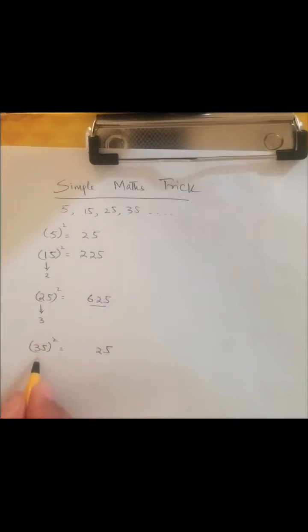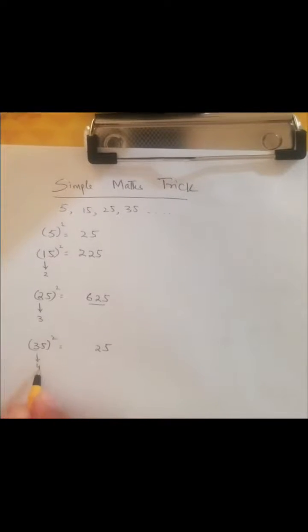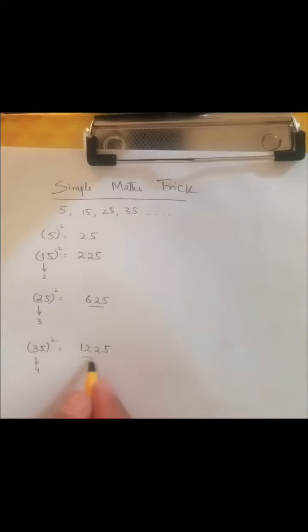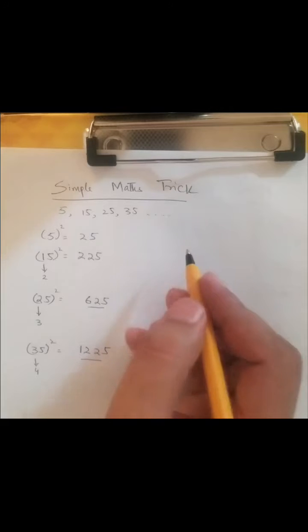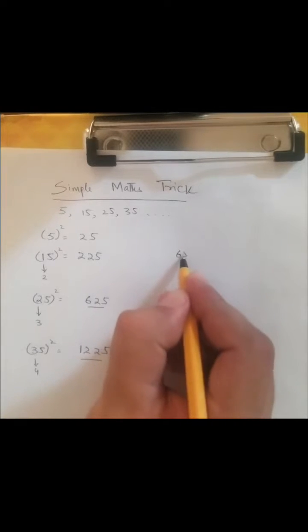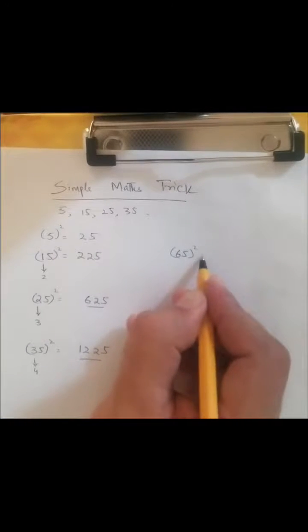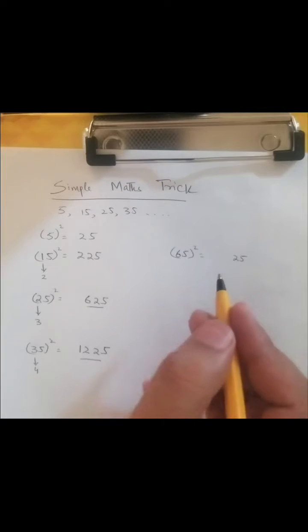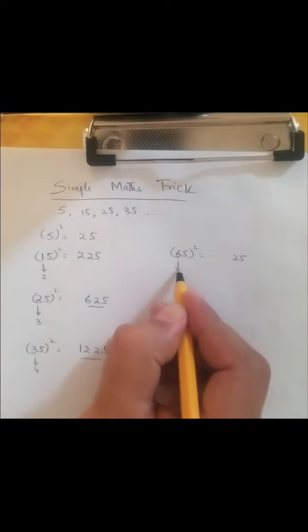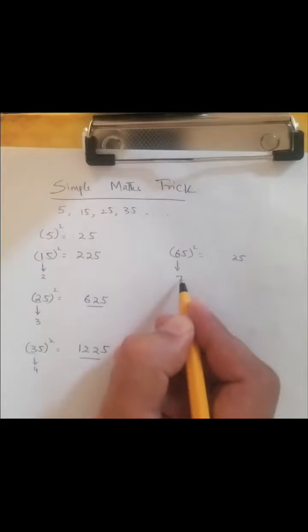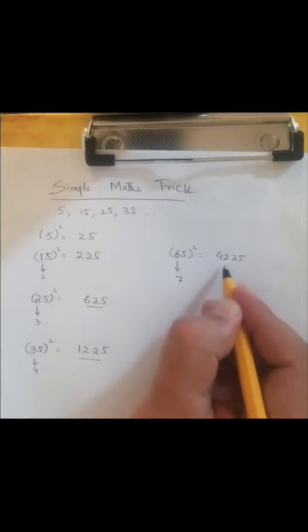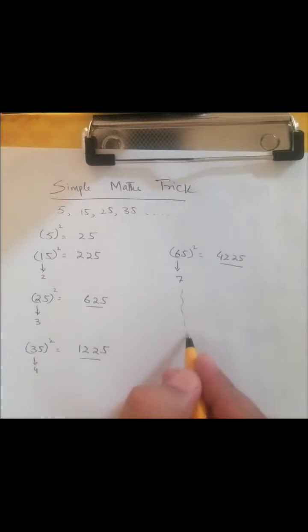the next number after 3 is 4, so 4 multiplied by 3, that will be 12. This is the square of 35. And so on - for example, the square of 65: first write 25, then the next number after 6 is 7, so 7 multiplied by 6, that is 42. This is the square of 65.